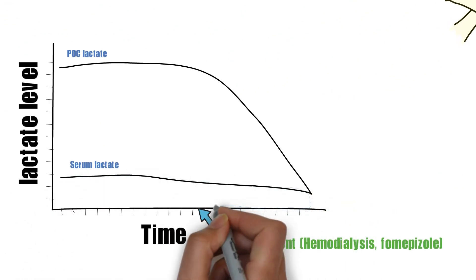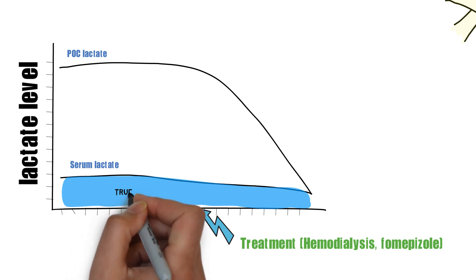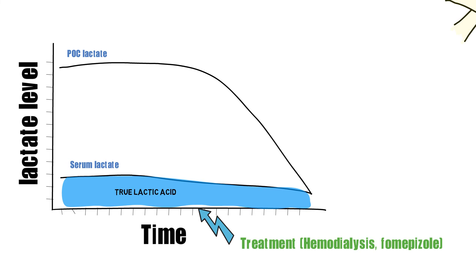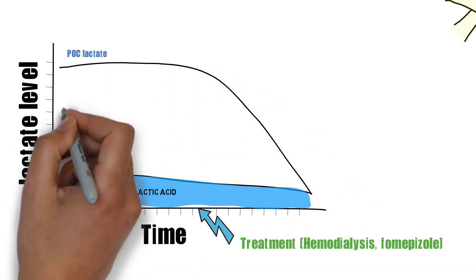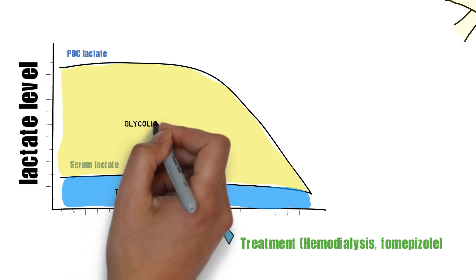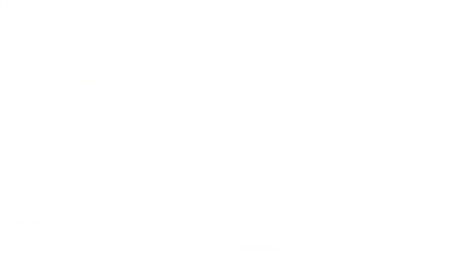Therefore, going back to our case, the serum lactic acid was likely measured by the lactate dehydrogenase-based system, which measured the true lactic acid. On the other hand, the point-of-care lactate measured both lactate and glycolate, as it was utilizing the lactate oxidase system. The difference between both values slowly decreased over time as the patient received treatment and the glycolic acid level decreased in the body.